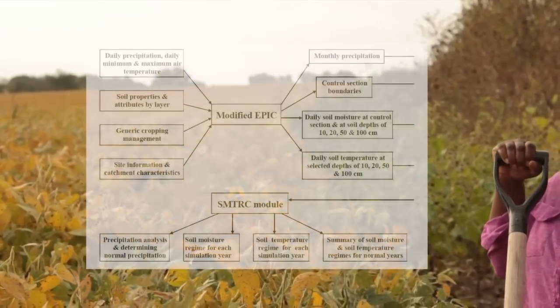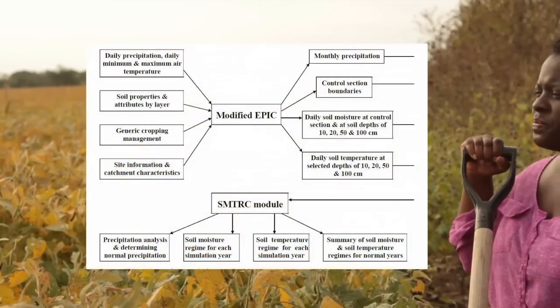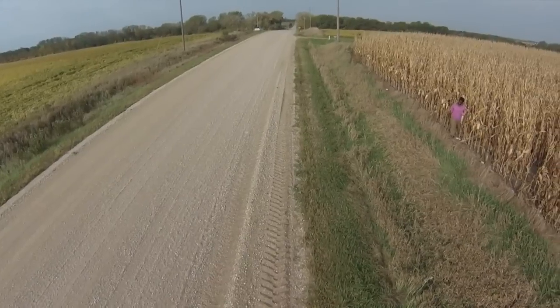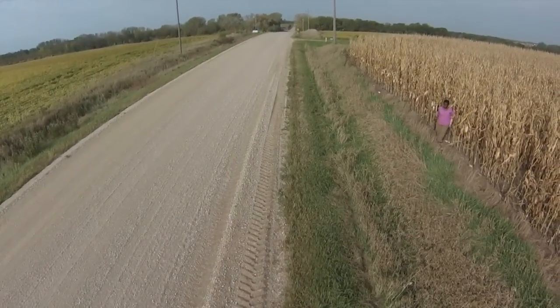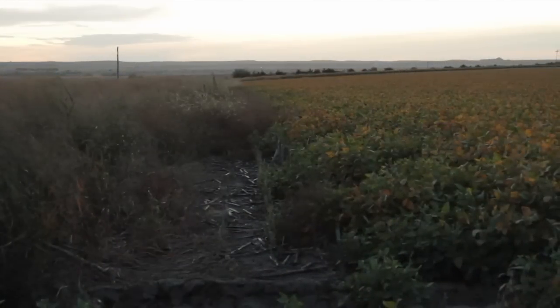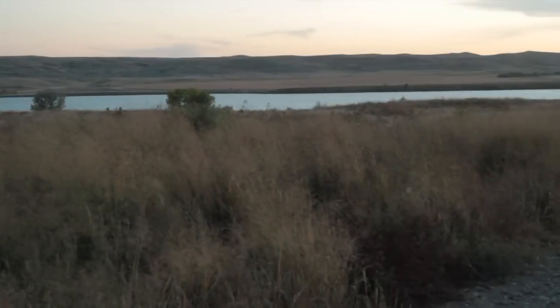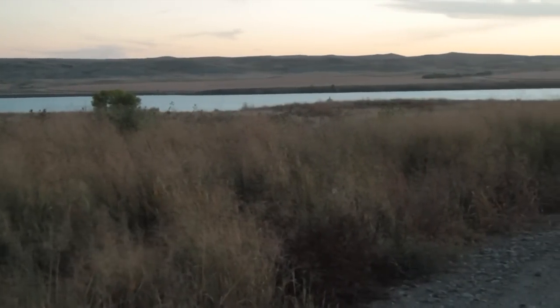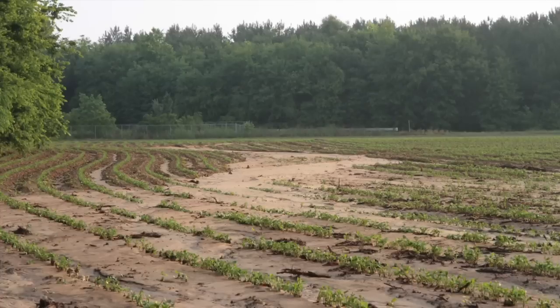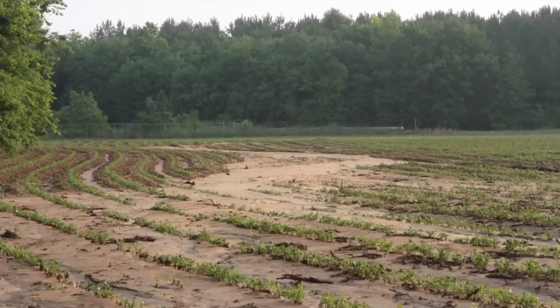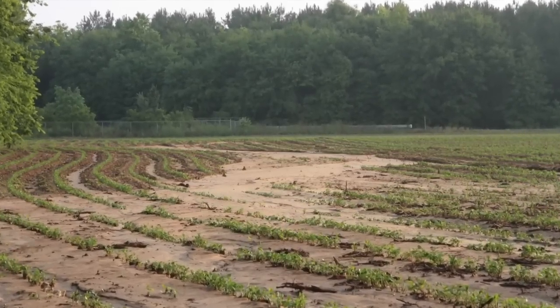I'm interested in the processes that happen at the field scale. The tools that I use are edge-of-field and landscape models. Edge of field represents the area that connects the upland fields to a water body or water source. My interest in edge of field is because how we manage the land impacts what leaves the land — the fields — that we're managing.